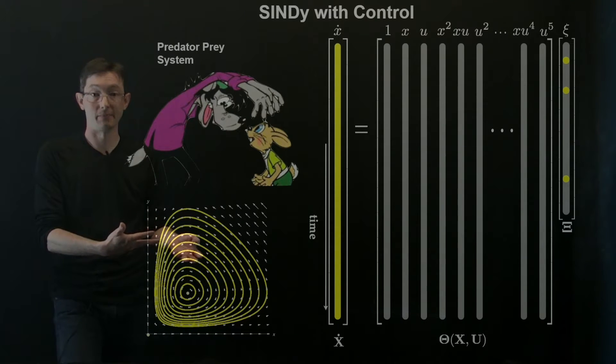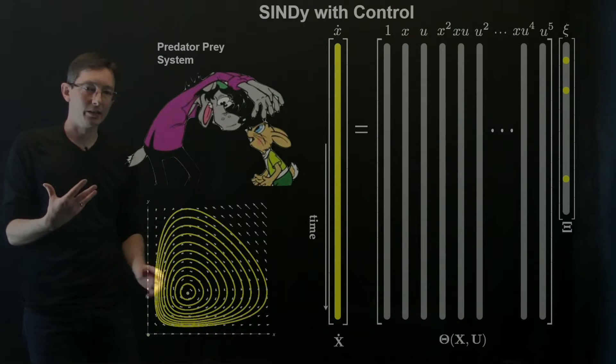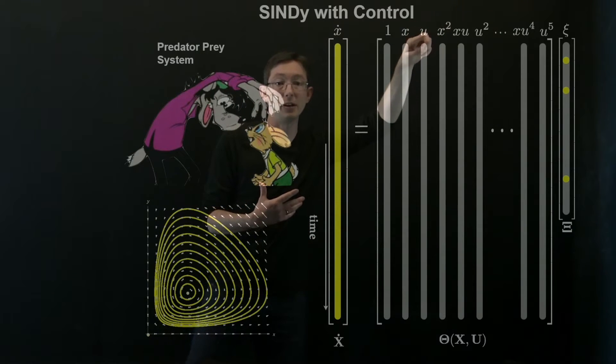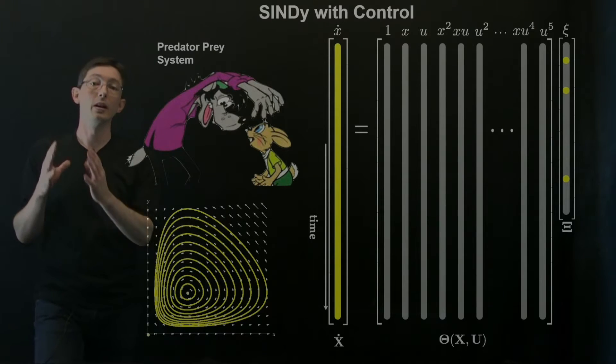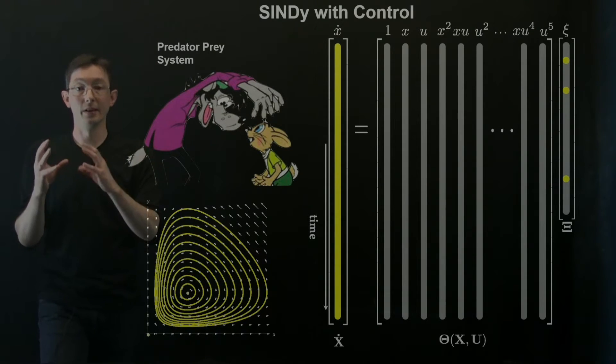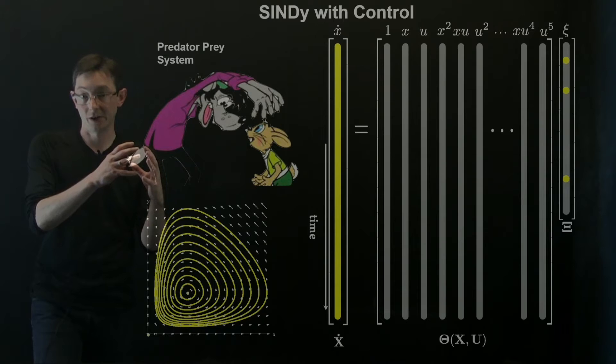And so there was this active feedback control modifying the dynamics of the system. So that's kind of the test case here. Let's say we actually can measure some actuation u that's modifying these dynamics and see if we can learn the nonlinear dynamics and the effective actuation.